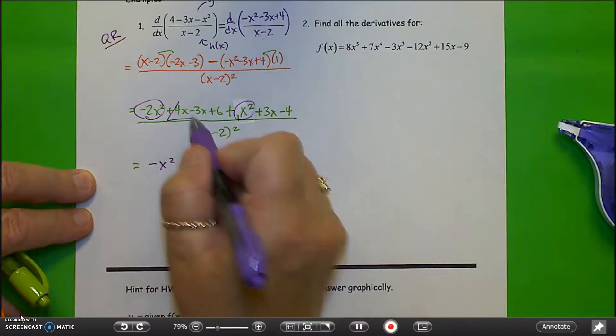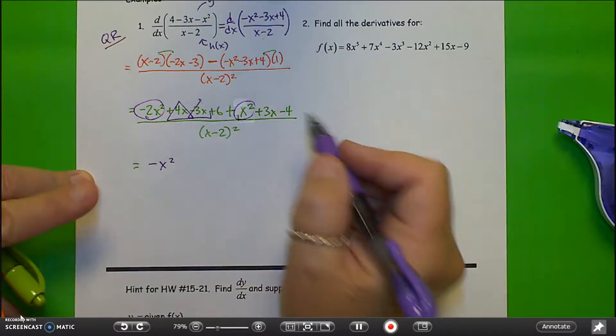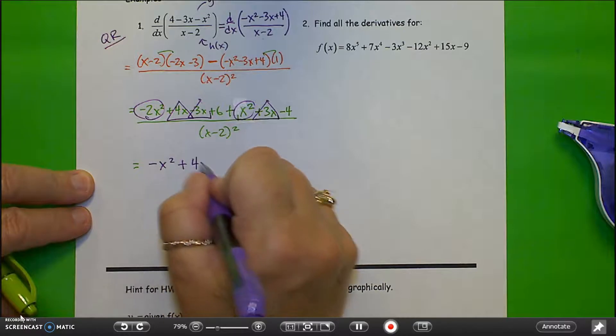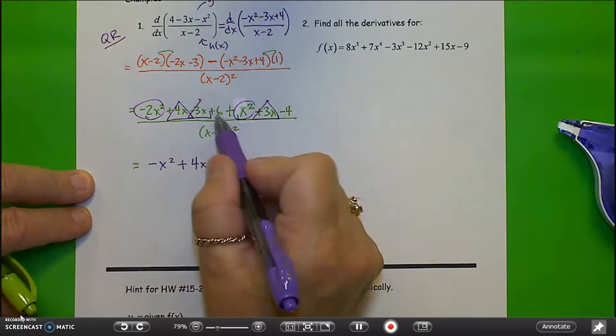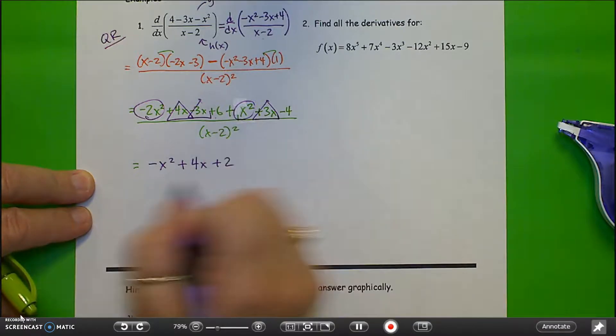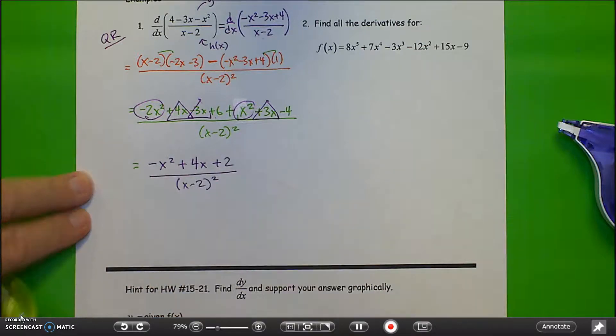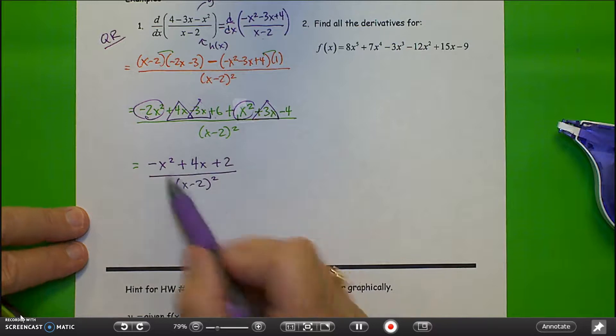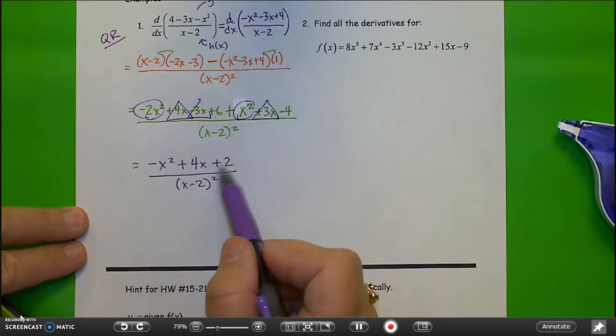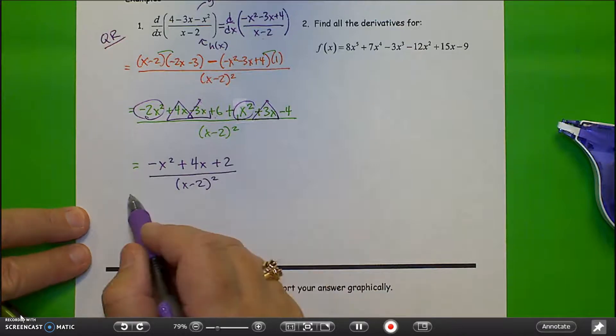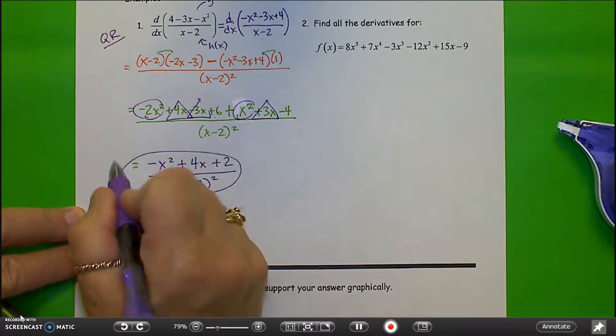My x's, I've got a 4x minus 3x plus 3x. So that leaves me with a plus 4x. And my numerics, plus 6 minus 4 is a plus 2. All over the denominator squared. And you would want to see if you can simplify this, but this particular one does not factor or simplify. So this is done. That's the derivative.